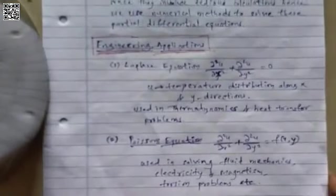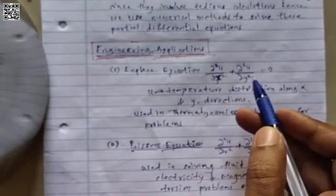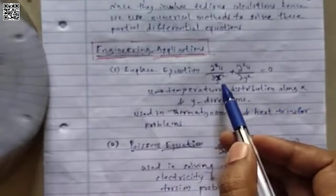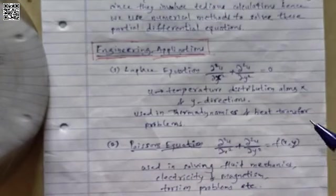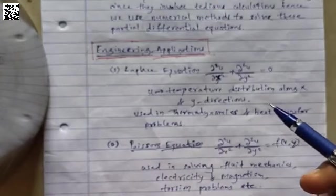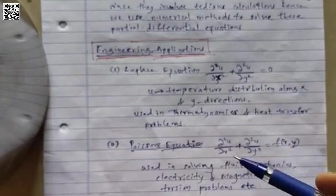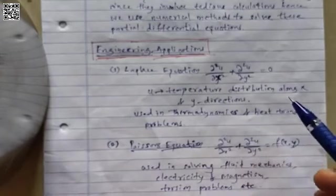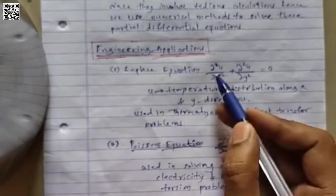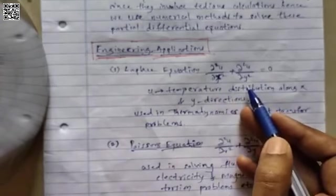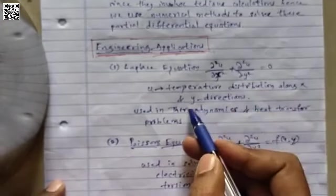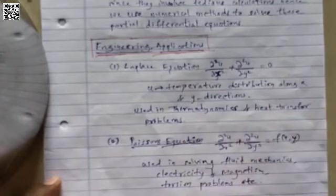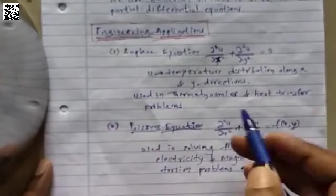Here are some practical engineering applications where we use PDEs. The Laplace equation appears in thermodynamics and heat transfer. It is used for finding temperature distributions: d²u/dx² + d²u/dy² = 0, where u is the temperature distribution and x and y are the spatial directions. This kind of equation is used in solving thermodynamics and heat transfer problems.